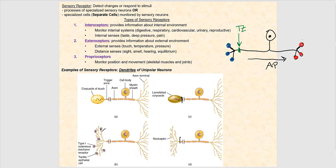We have different types of sensory receptors. The first type are what we call interoceptors. They provide information about the internal environment, which is then sent to the central nervous system for processing and integration. We find these interoceptors in internal systems — for example, our digestive, respiratory, urinary, cardiovascular, and reproductive tracts — as well as internal senses such as taste, deep pressure, and pain.